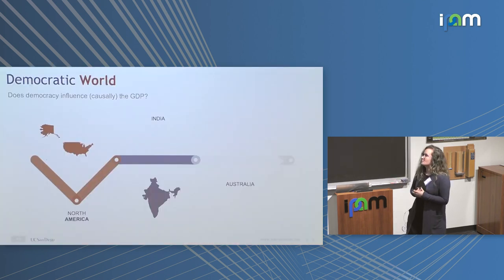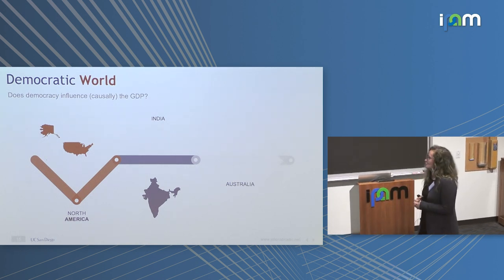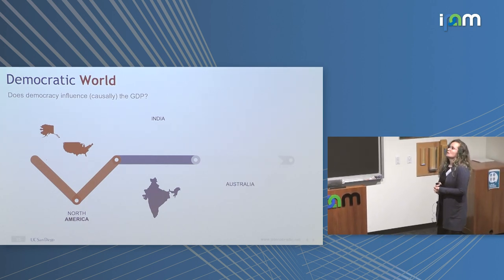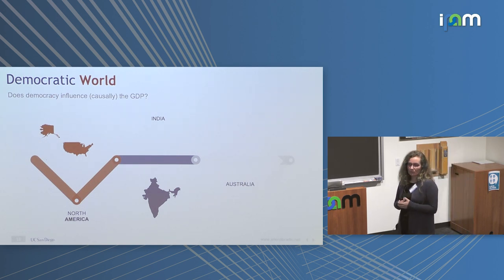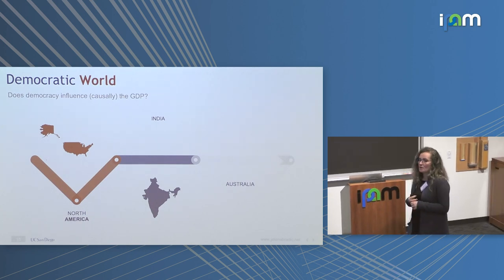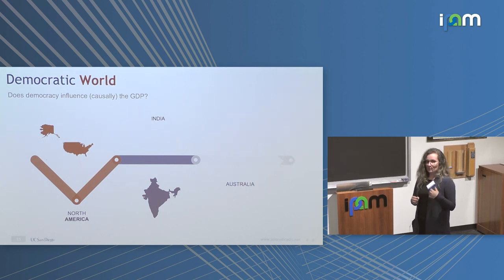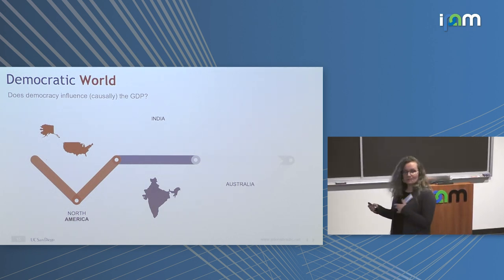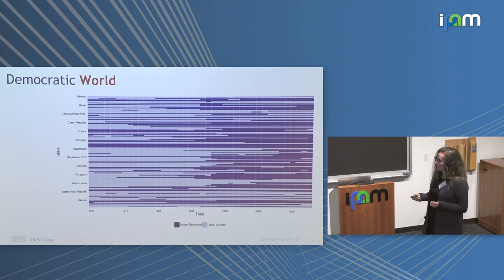Dynamic treatment is really interesting. Here's a social science application I love — my venture into social sciences. The question: does democracy influence GDP growth across the whole world, looking at North America, China, India, Serbia? Economists have an index of democracy — if it's positive, it counts as democratic. Countries go in and out of treatment. Serbia, for example, became democratic supposedly in 2000. We want to ask: is there positive GDP growth as a result?